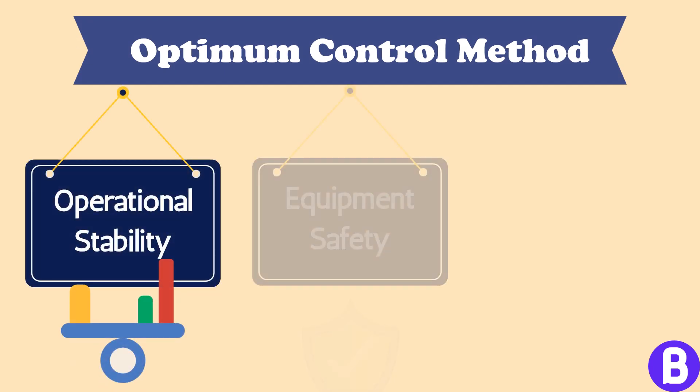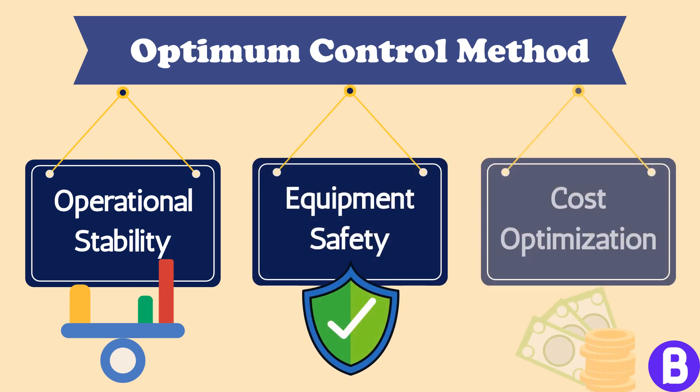Now after we have chosen the parameter to get controlled, we need to choose the best control method that fits our system. This can be from the point of view of operational stability, equipment safety, or cost optimization.